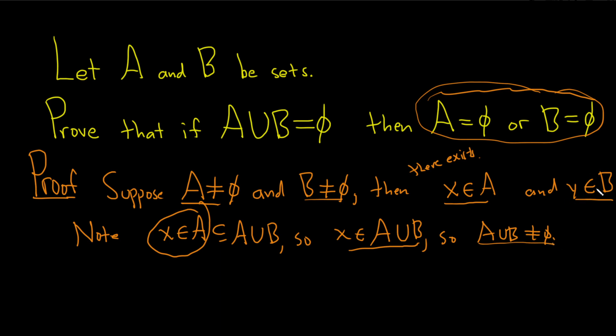We could have done the same exact argument with Y, right? I could have said Y is in B which is a subset of A union B. Therefore Y is in A union B. Therefore A union B is non-empty.